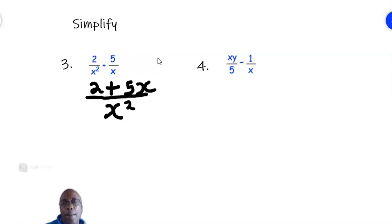Let's go to number 4. We draw a line. The LCM of 5 and x. So we have 5 and x. The LCM must be simply 5 times x, which is 5x. 5x is the lowest term both 5 and x can go into.